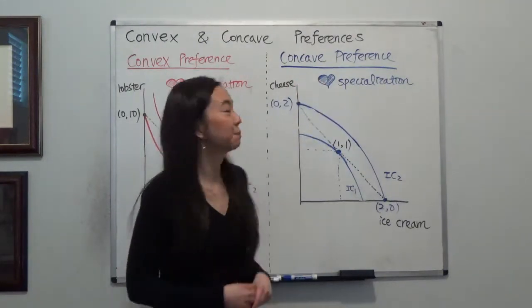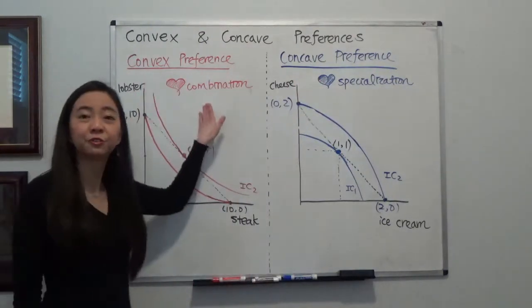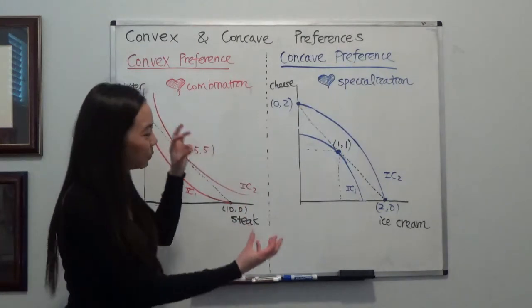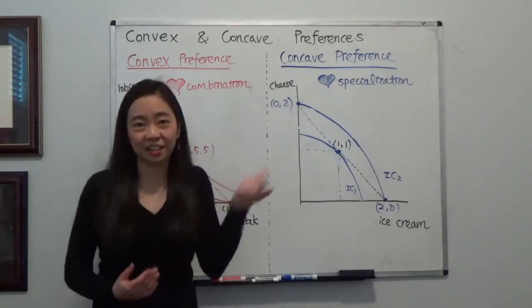Now, bottom line first, if you have a convex preference, that means you like a good standing alone by yourself, but when you combine them, you like it even better.